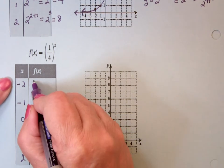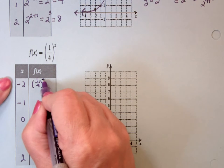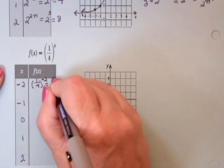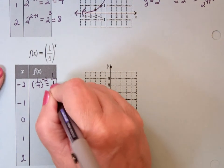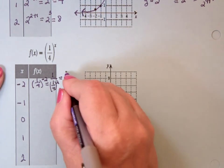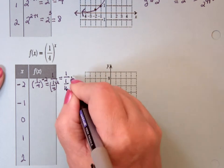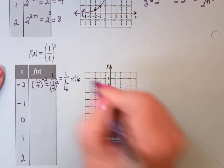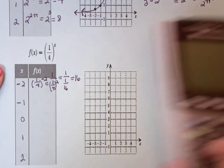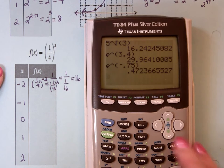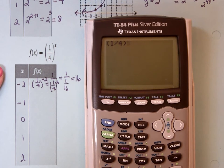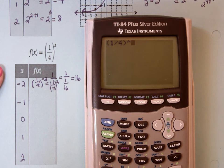Well, what would this be? I just follow. 1 fourth to the negative 2, which is 1 over 1 fourth squared, which is 1 over 1 over 16. Invert and multiply, I get 16. Now, if you don't like that, easy thing to do is to take parenthesis 1, divide 4, parenthesis, raise that to the negative 2 power.